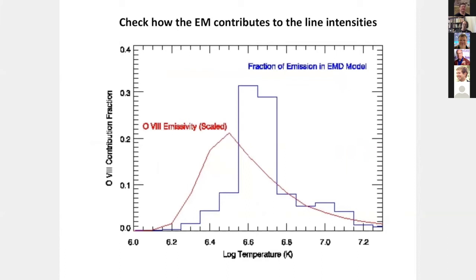I also want to make sure the emission from the line I'm interested in is actually coming from the temperature I think it is. Looking at the red plot — the emissivity of oxygen 8 scaled — you can see it peaks a little bit lower than the peak of the emission measure distribution. When you fold those through, you can determine from which part of the emission measure the oxygen 8 is coming from, and it is indeed coming mostly from that very strong dominant peak. This tells us that we know the temperature oxygen 8 is formed at in the collisional ionization equilibrium models.